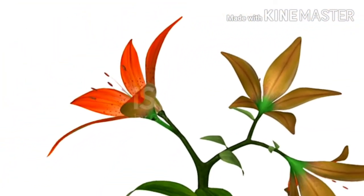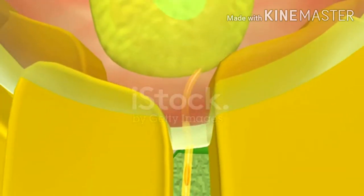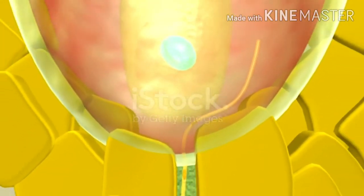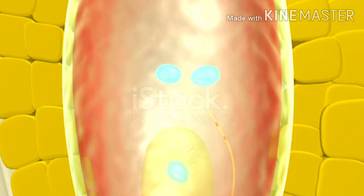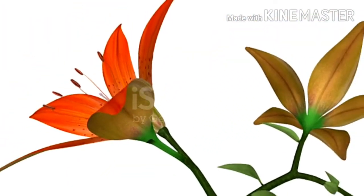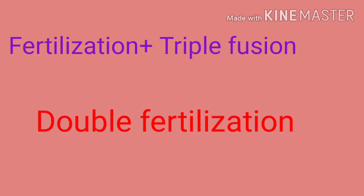The fusion of three nuclei is known as triple fusion. Endosperm will divide later on to form a nutritive tissue which will provide nourishment to the developing embryo. The process of fertilization and triple fusion together is called double fertilization.